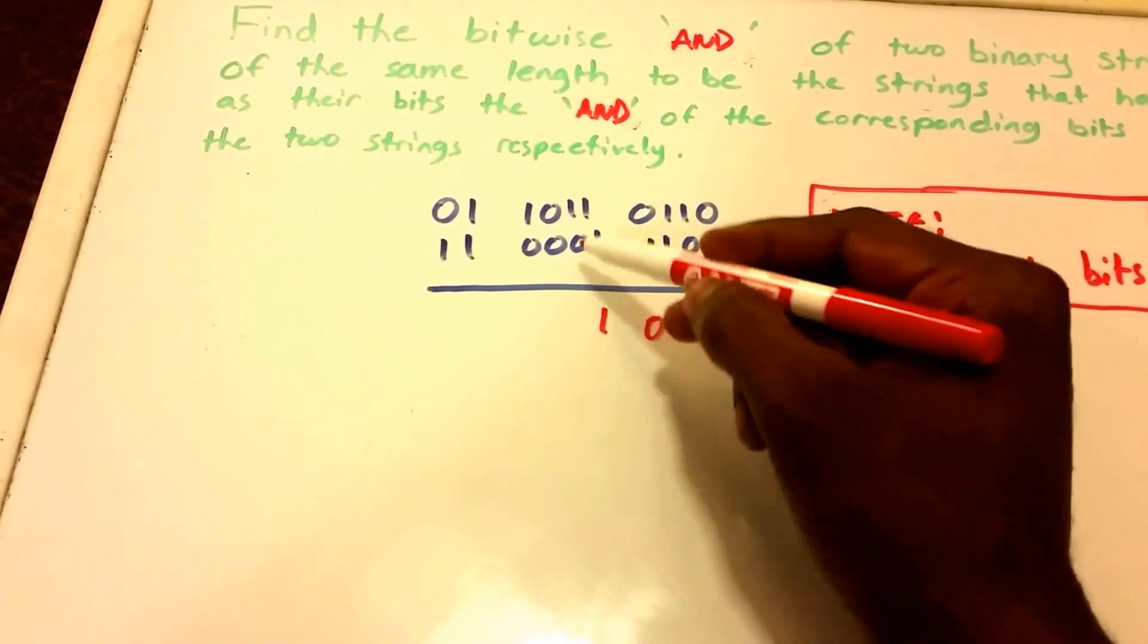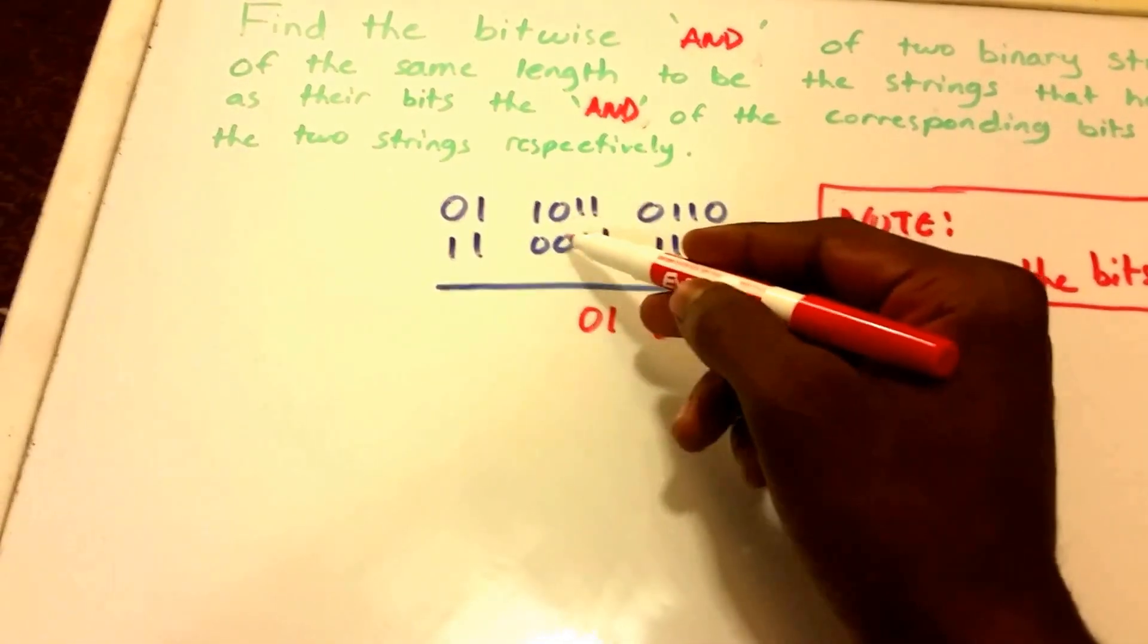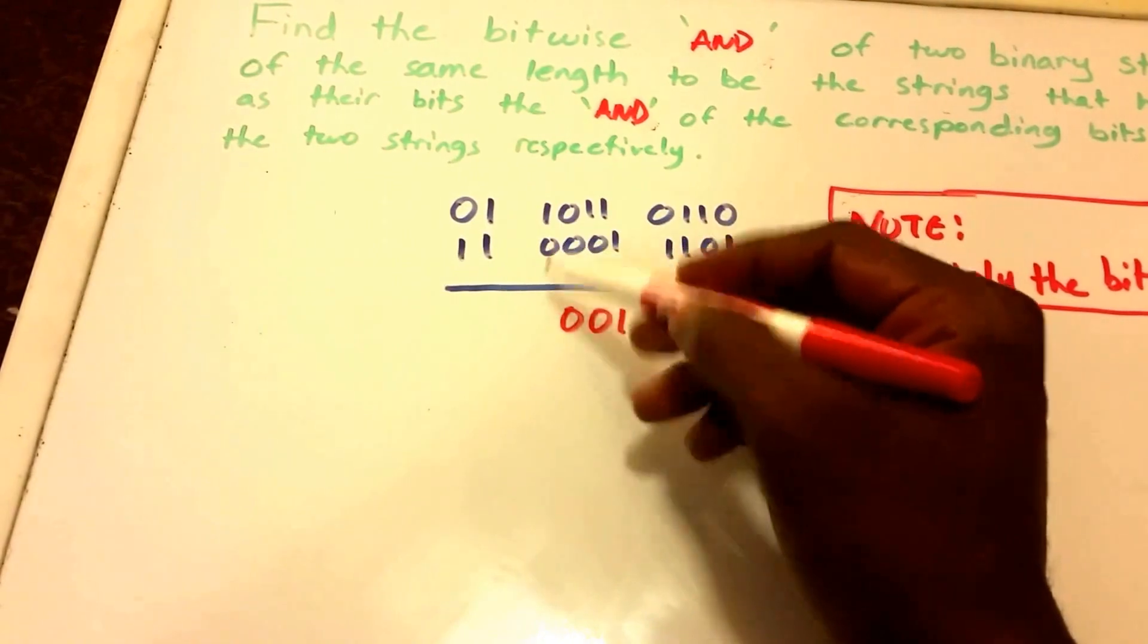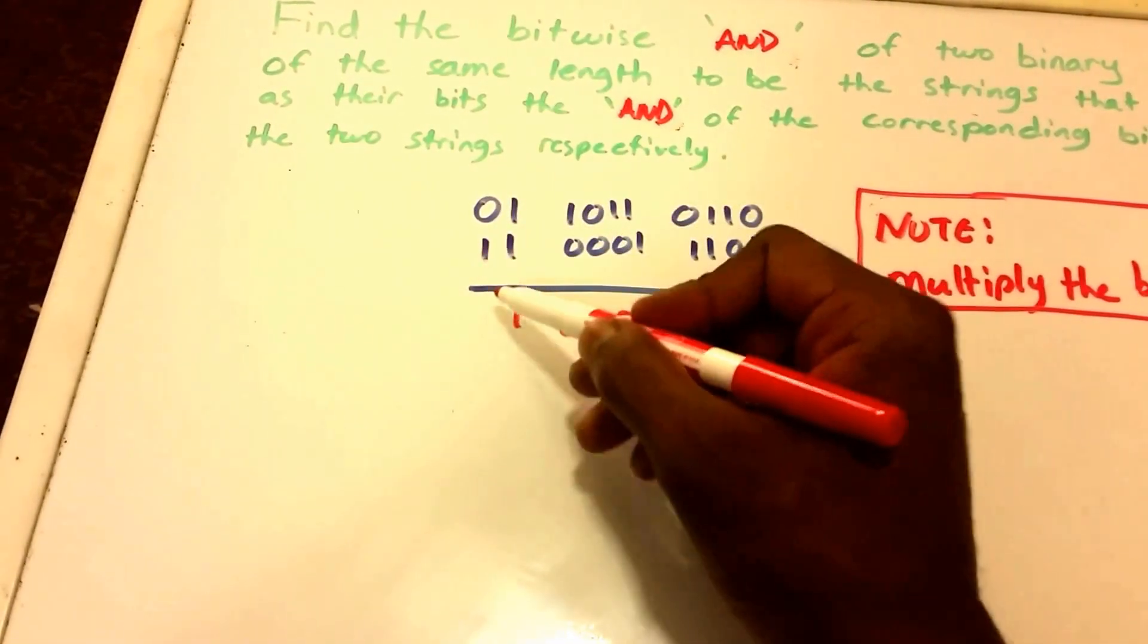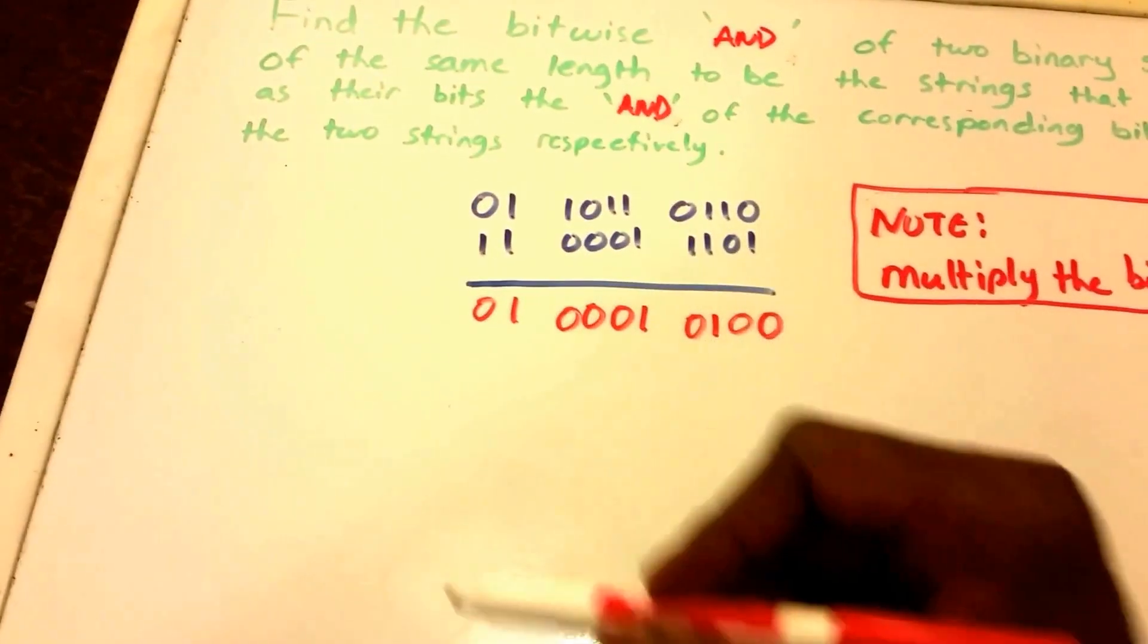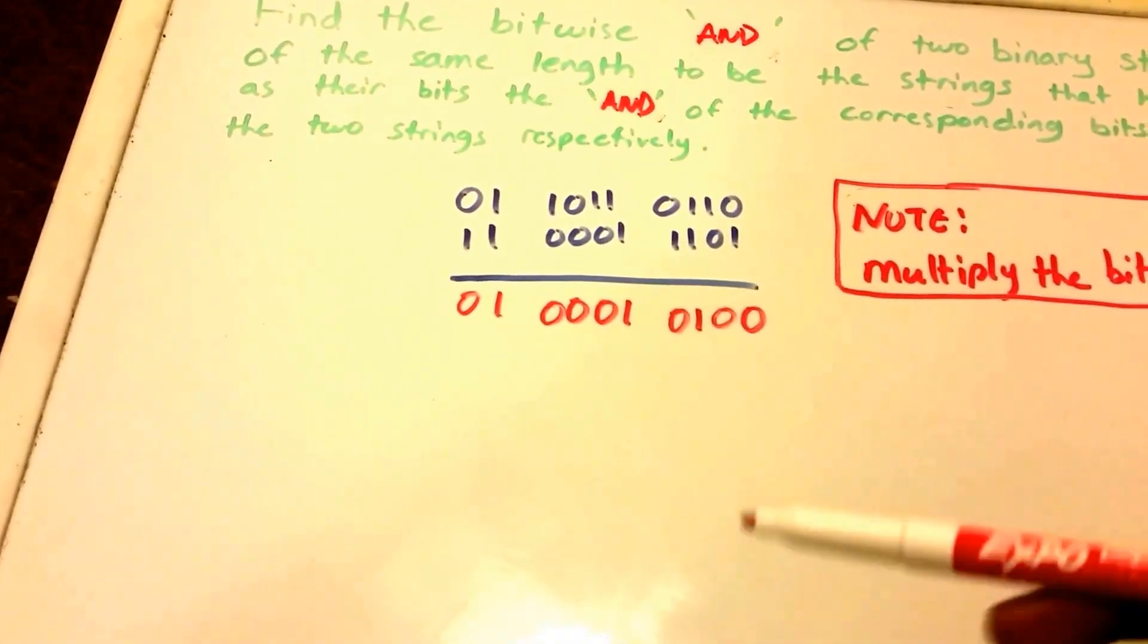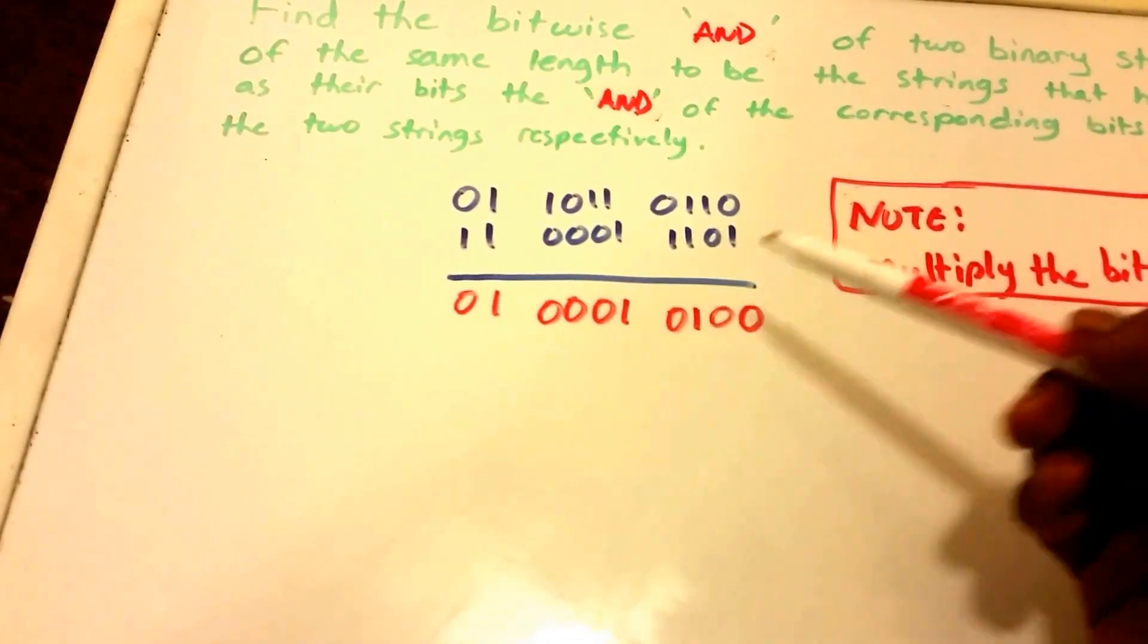1 times 0, we get 0. 0 times 0, we get 0. 1 times 0, we get 0. 1 times 1, we get 1. And 0 times 1, we get 0. So for the bitwise AND, this would be the string of the two binary strings.